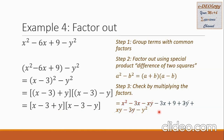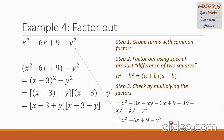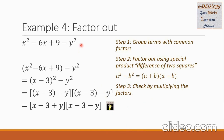From here, let us see terms we can combine or cancel. The negative xy and the positive xy cancel each other. Also, the positive 3y and negative 3y cancel. Collecting what remains: x squared, then negative 3x and negative 3x combine to negative 6x, then 9 and negative y squared. The final answer equals the original problem, confirming that this trinomial factored form is our final answer.